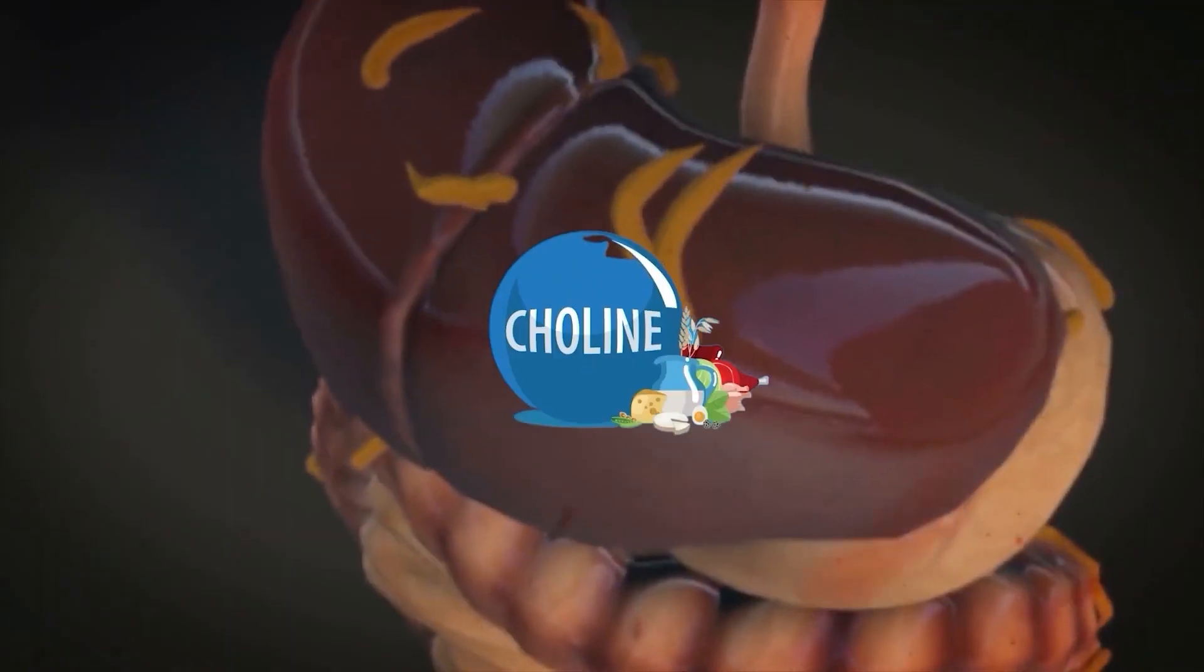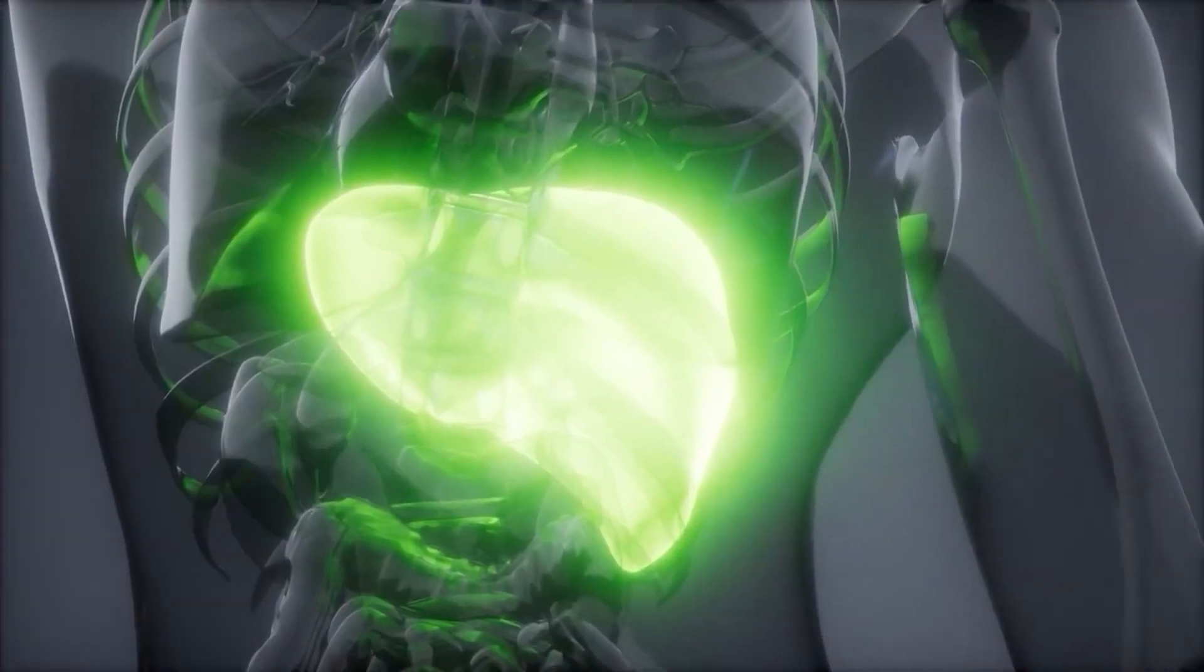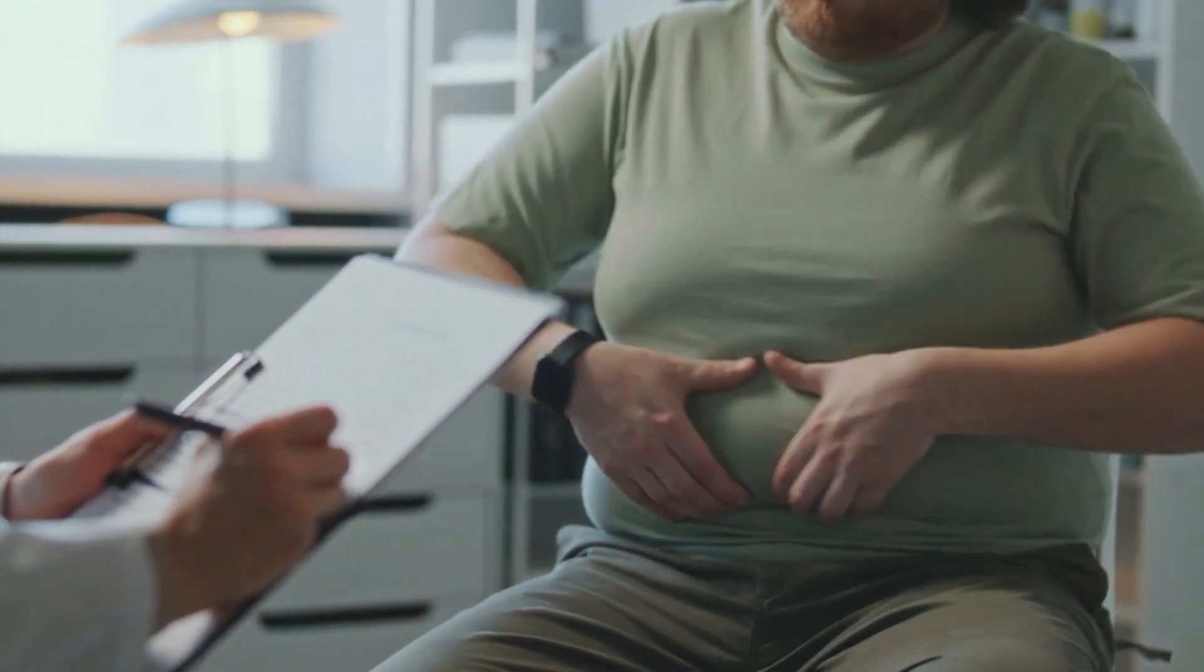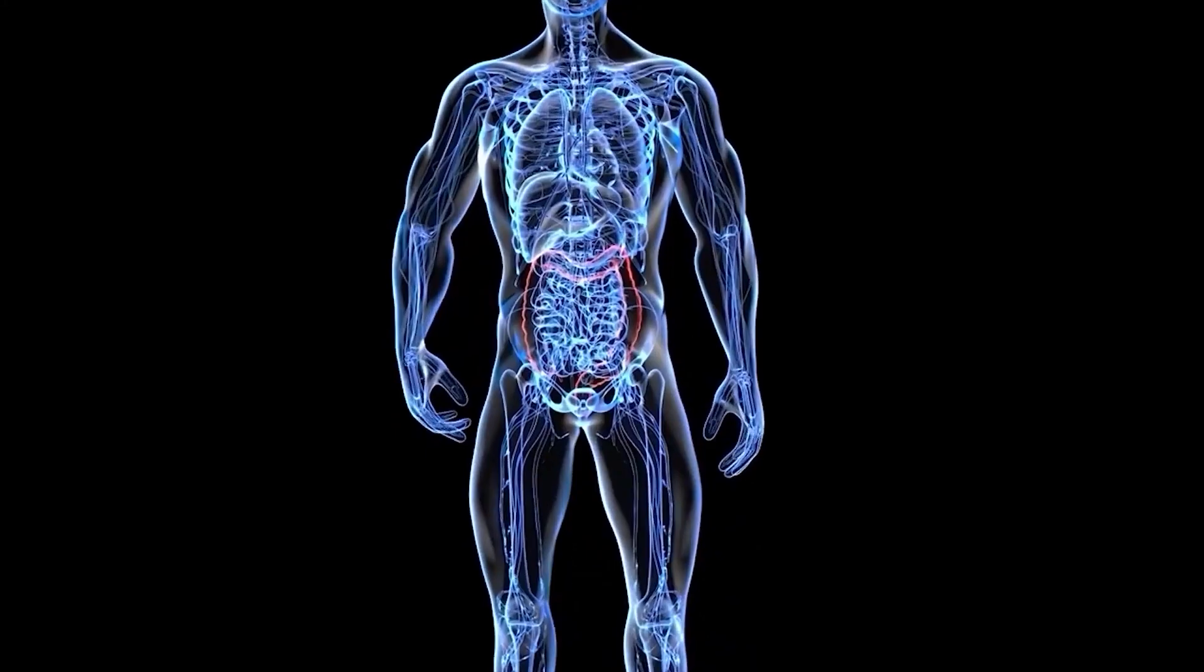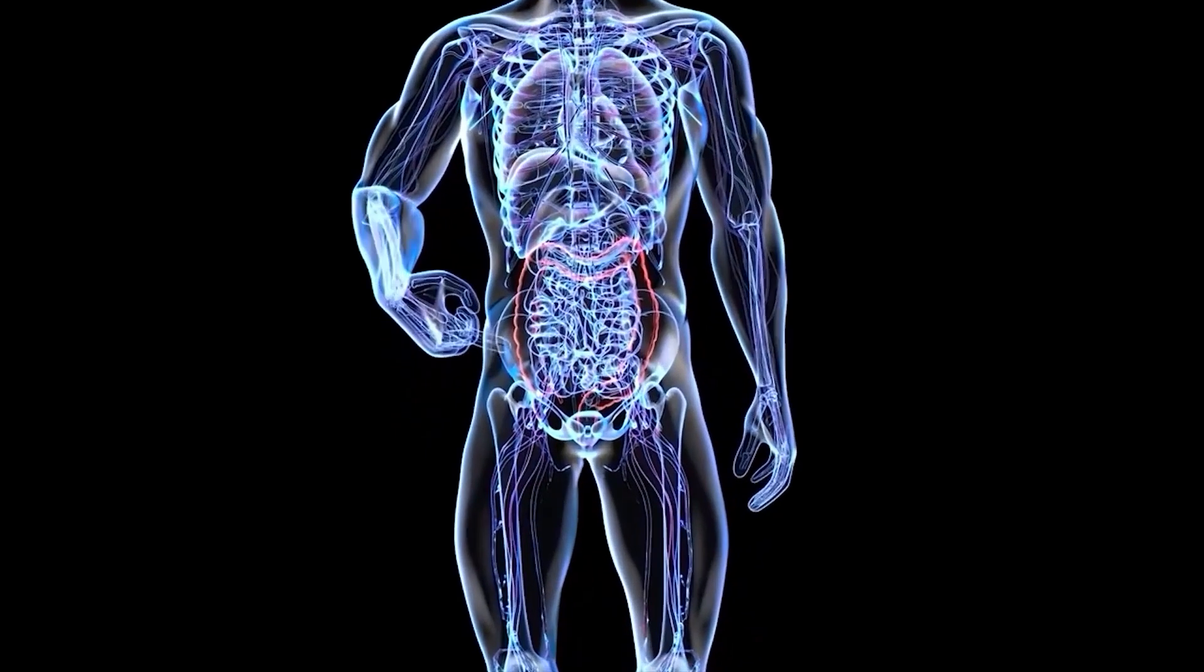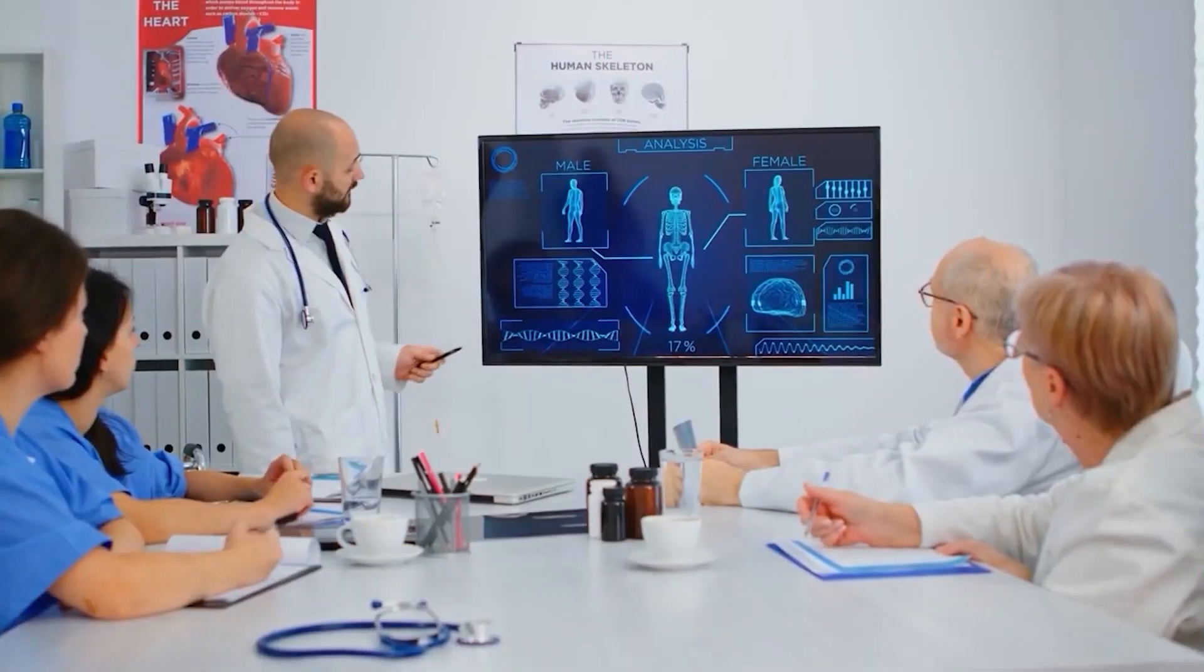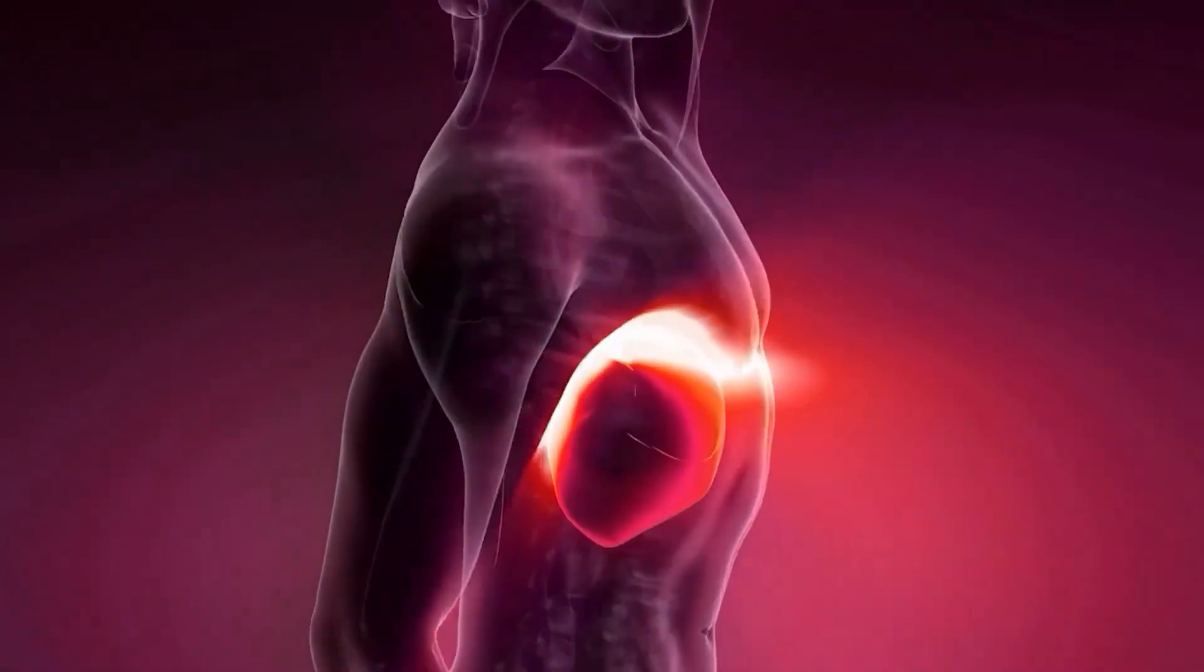Here's how it works. Choline plays a key role in fat metabolism. It acts as a lipotropic agent, meaning it helps the liver break down and transport fats efficiently, preventing them from building up in liver tissue. It also assists in moving fat and cholesterol out of the liver to other areas of the body, where they can be used for energy or safely excreted. But choline doesn't stop there. It also supports the detoxification process by helping synthesize compounds needed to eliminate harmful substances from the liver.